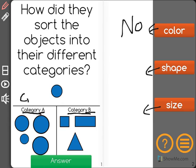All of the shapes in Category A are circles, and Category B has no circles, but it has all the other shapes, or some of the other shapes. There are lots of shapes. So, did they sort it by shape? Yes, they did.